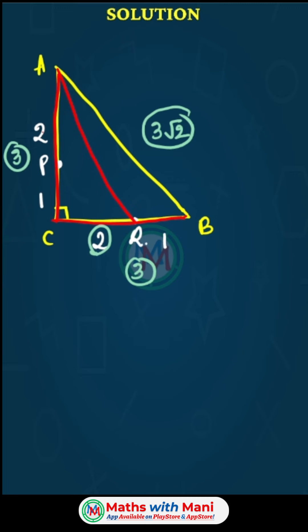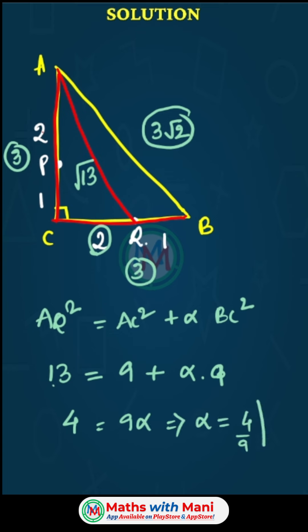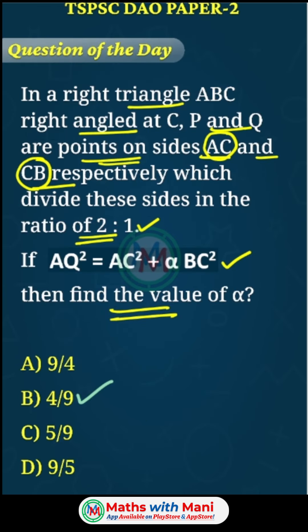Now, AC is 3 parts and CQ is 2 parts. So AQ = √(3² + 2²) = √(9 + 4) = √13. Given AQ² = AC² + α BC², we have 13 = 9 + α(9). So 13 - 9 = 9α, which gives 4 = 9α. Therefore α = 4/9. Option B is the correct answer.